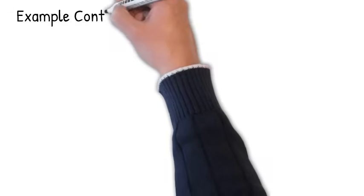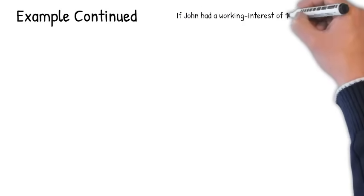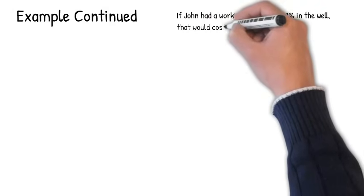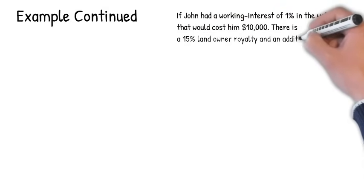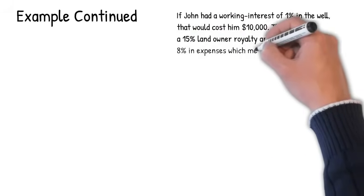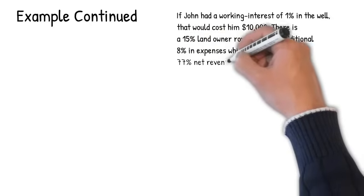Example continued. If John had a working interest of 1% in the well, that would cost him $10,000. There is a 15% landowner royalty with an additional 8% in expenses, which means there is a 77% NRI for John the working interest owner.